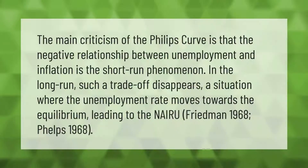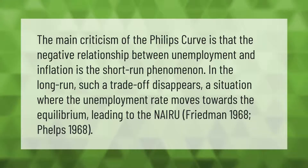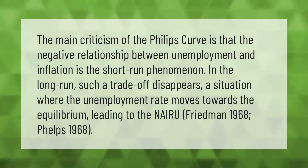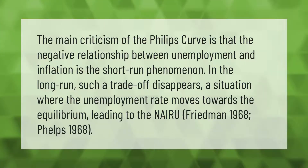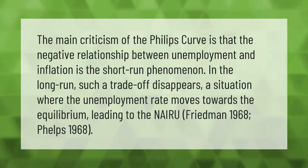The main criticism of the Phillips curve is that the negative relationship between unemployment and inflation is a short-run phenomenon. In the long run, such a trade-off disappears, with the unemployment rate moving toward equilibrium — leading to the NAIRU — as theorized by Friedman (1968) and Phelps (1968).